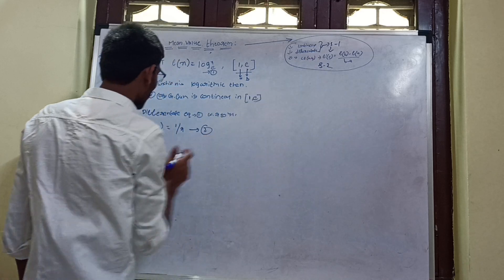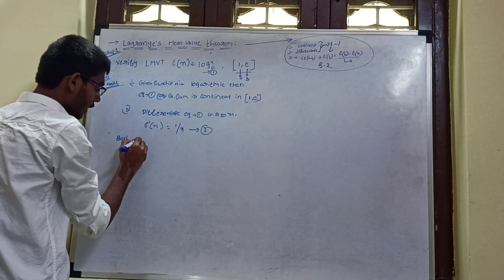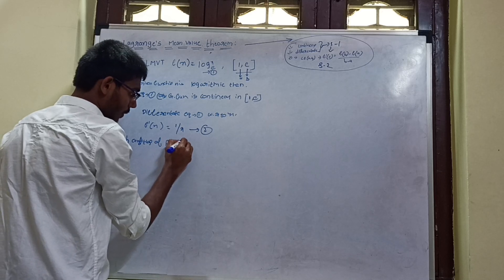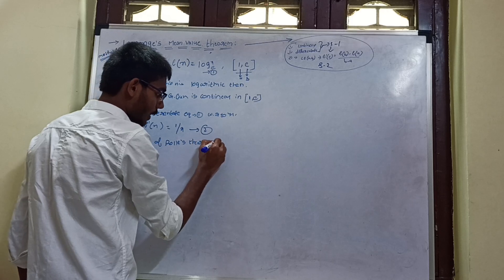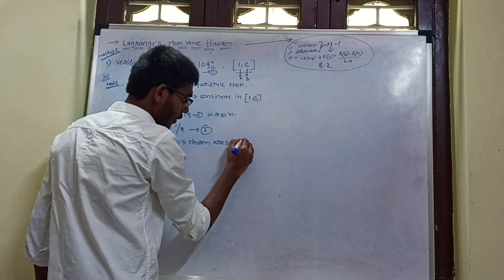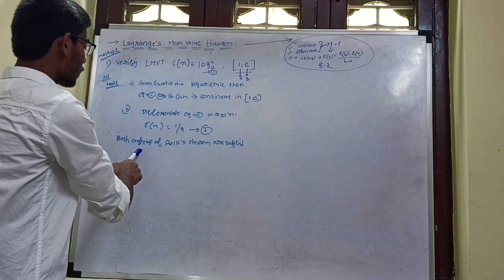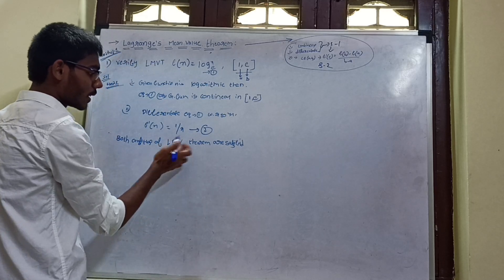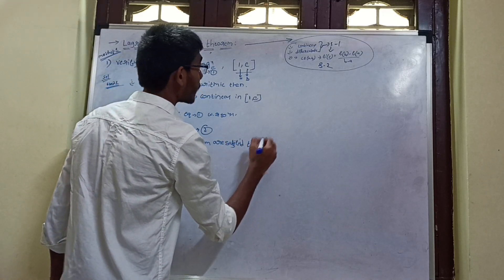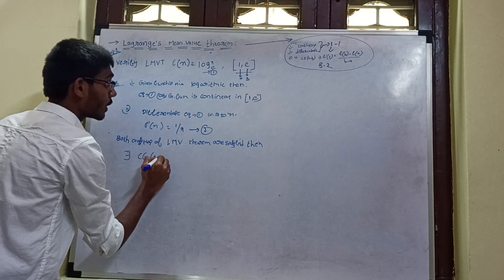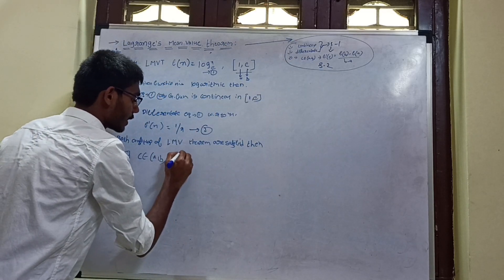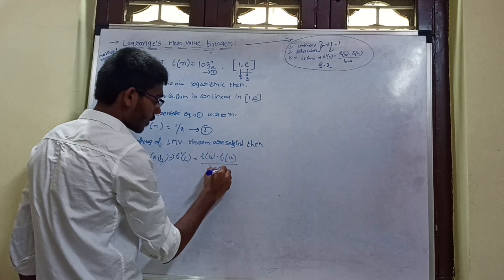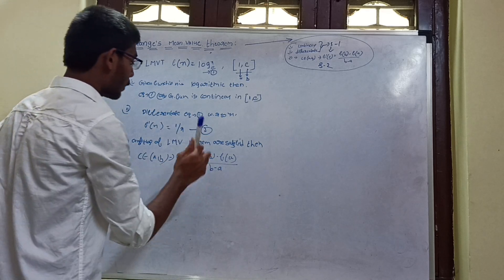Both conditions of Rolle's theorem are satisfied. So there exists c belonging to (a, b) such that f'(c) = [f(b) - f(a)] / (b - a).